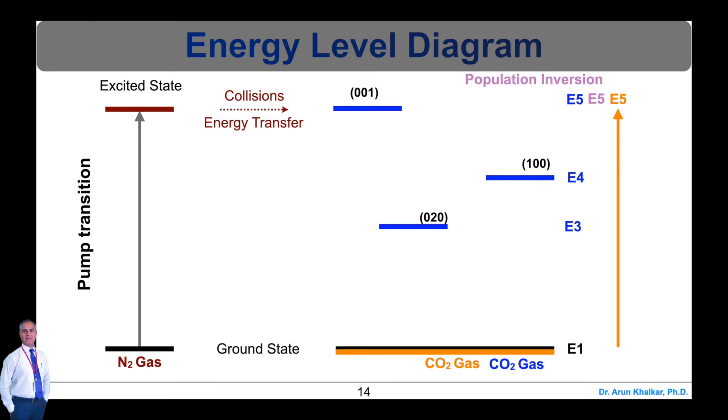The laser transition between E5 to E4 levels produces far infrared radiation at the wavelength of 10.6 micrometers. The lasing transition between E5 to E3 levels produces far infrared radiation at 9.6 micrometer wavelength.